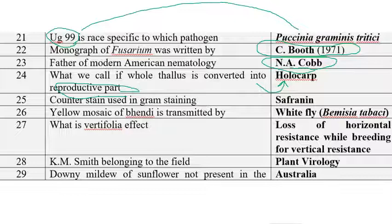The counterstain used in Gram staining is safranine. Safranine is used as the counterstain in Gram staining.